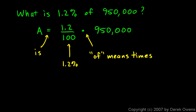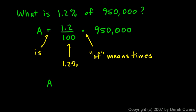So a equals 1.2 over a hundred times nine hundred and fifty thousand. If I multiply 1.2 times nine hundred and fifty thousand and divide by a hundred, I end up with a equaling eleven thousand four hundred — the same answer as before. Translating the problem like this into an equation is sometimes a little bit simpler and smoother to do.